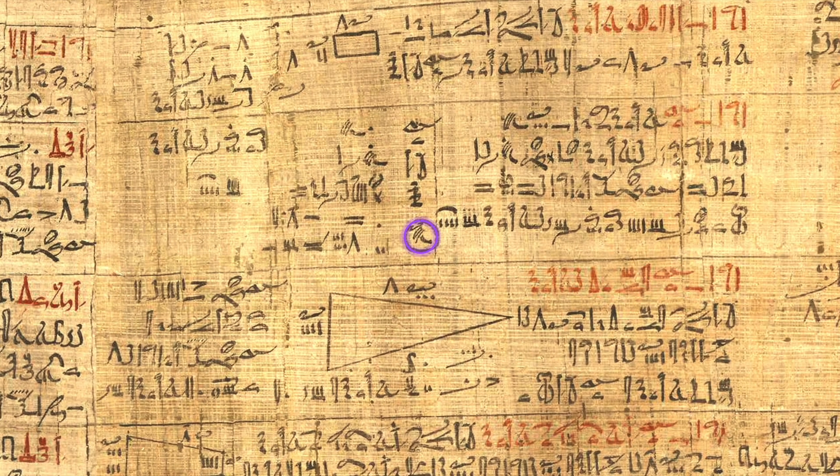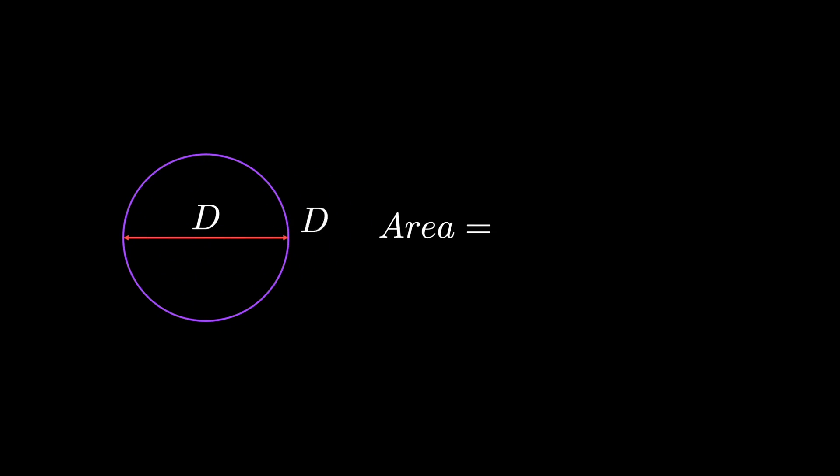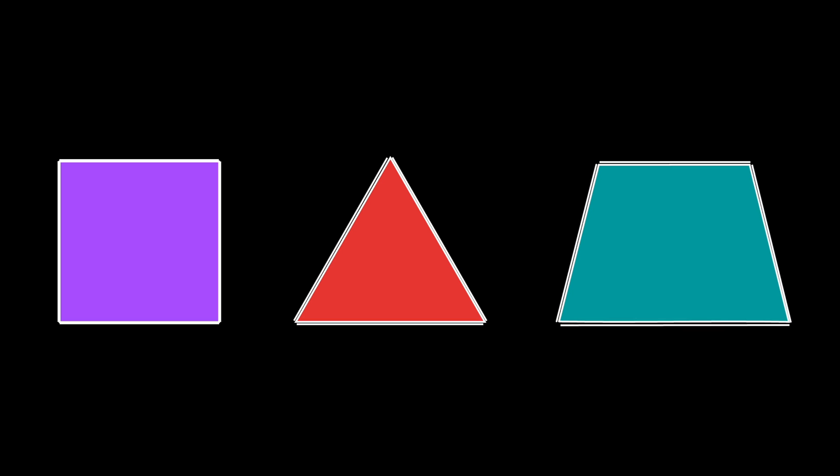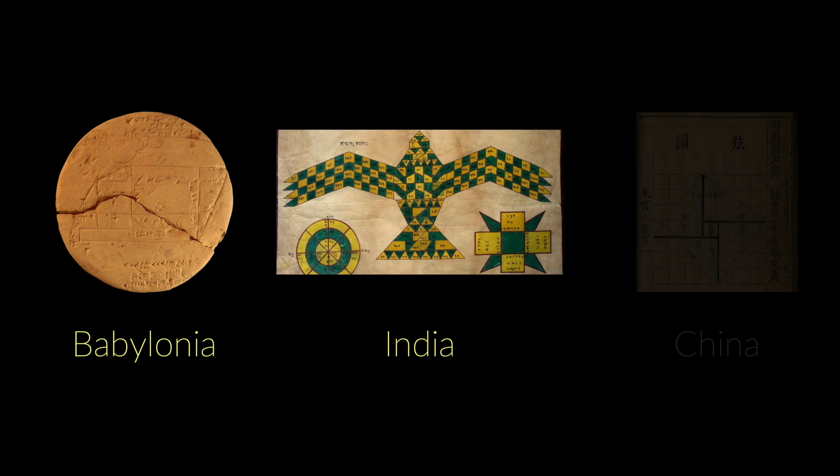And although they studied the circle, their formula for the area of the circle was an approximate and not an exact one. And for the most part, their geometry was rectilinear, meaning the shapes they studied were straight-edged shapes. The same was also true of the geometry of other ancient civilizations, like Babylonia, India, and China.